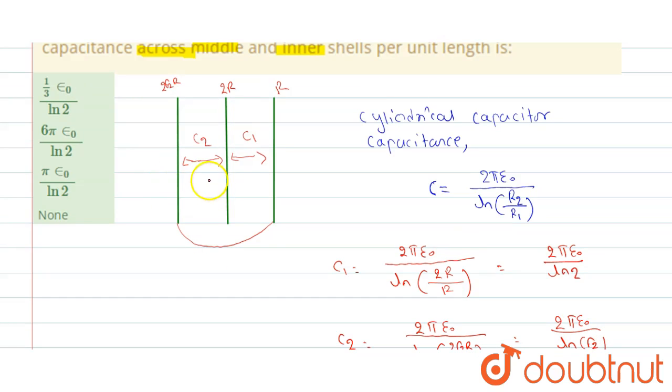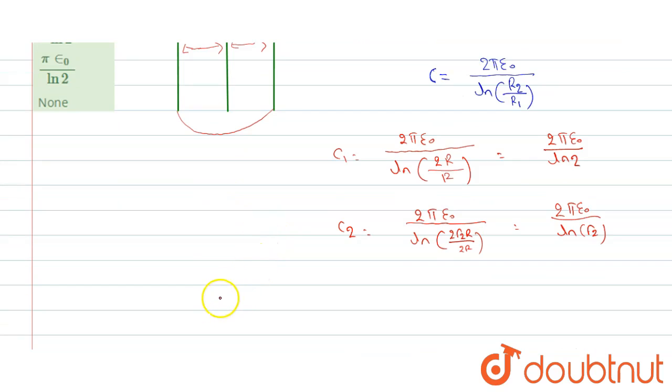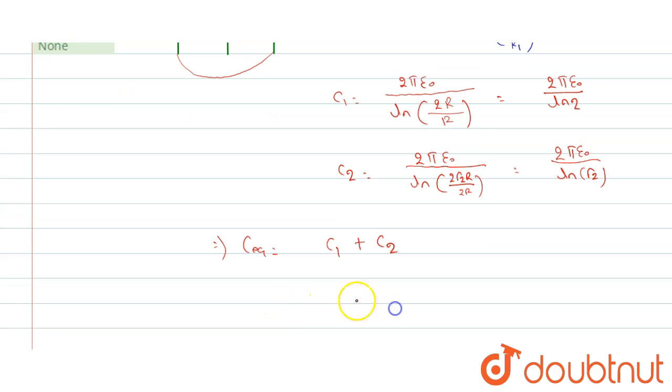Now we can see here both these capacitors are in parallel. That implies the equivalent capacitance will be equals to C1 plus C2.